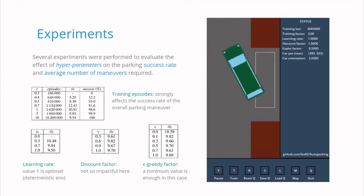It is also interesting to see how the different hyperparameters affect the model in terms of success rate, that is how many parking attempts terminate without accidents, and the average number of maneuvers required to do it. As expected, longer training provides better performance. After about 10 million of simulated episodes, the model becomes very reliable.